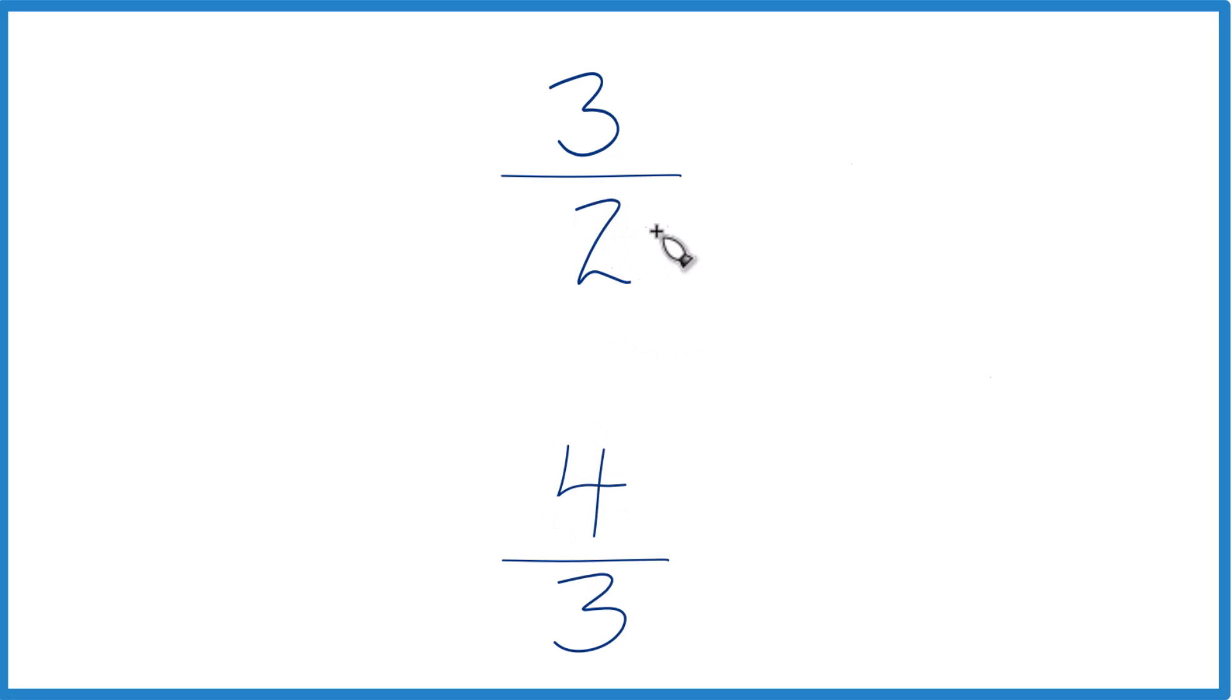Because if we could find a common denominator, right now we have 2 and 3, but if that were the same, we could just compare the numerators and we'd know whether 3 halves is greater than, less than, or equal to 4 thirds.